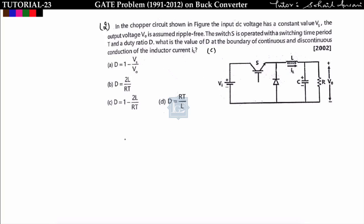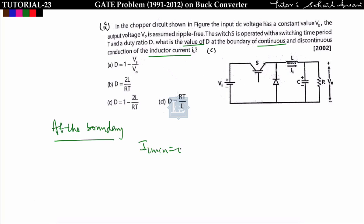The second problem: in the chopper circuit shown in figure, the input DC voltage has a constant value V_s. The output voltage V_naught is assumed to be ripple free. The switch is operated with a switching time period T and duty cycle D. We have to find the value of D at the boundary of continuous and discontinuous conduction of inductor current i_L. At the boundary, i_L minimum is equal to zero.